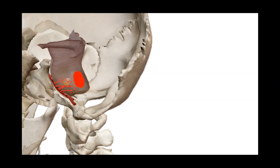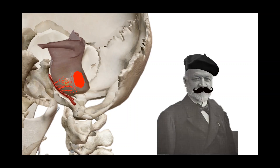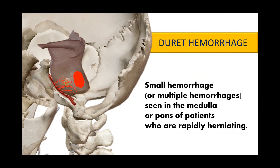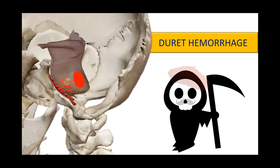When Duret discovered this condition, he had a brilliant idea on how doctors would call this disease — Hémorragie de Duret, or in English, Duret hemorrhage. Duret hemorrhages are small, multiple hemorrhages seen in the medulla or pons of patients who are rapidly herniating, and this is a very deadly situation.